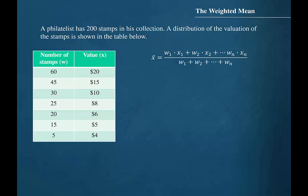The formula for the weighted mean is to multiply the weight of each data value by its corresponding value, then add those products, and then divide that sum by the sum of the weights.